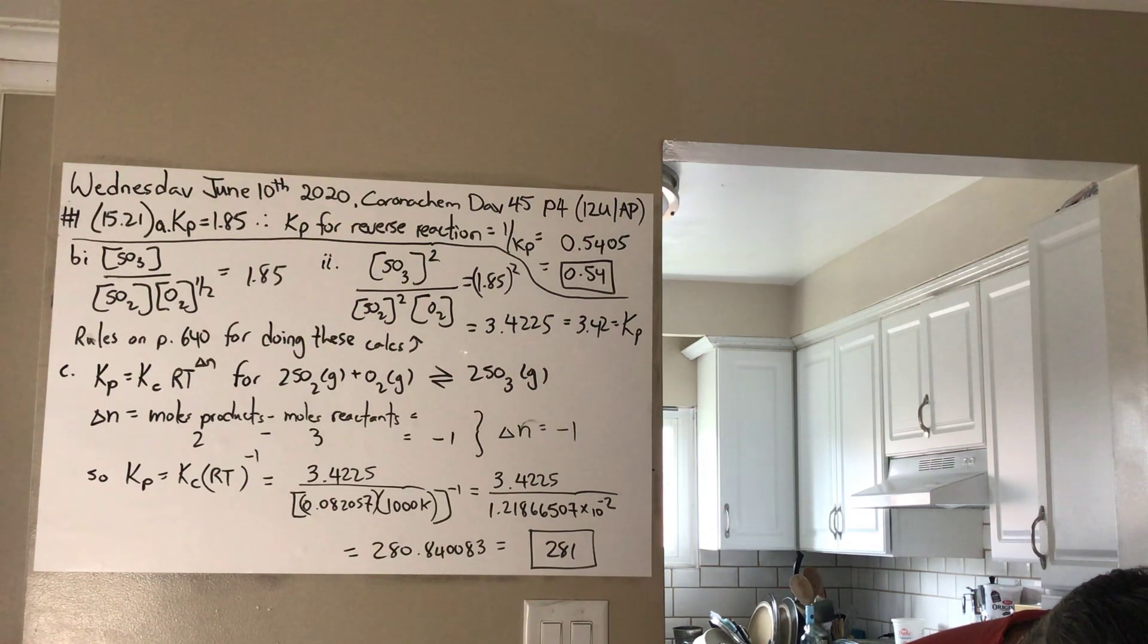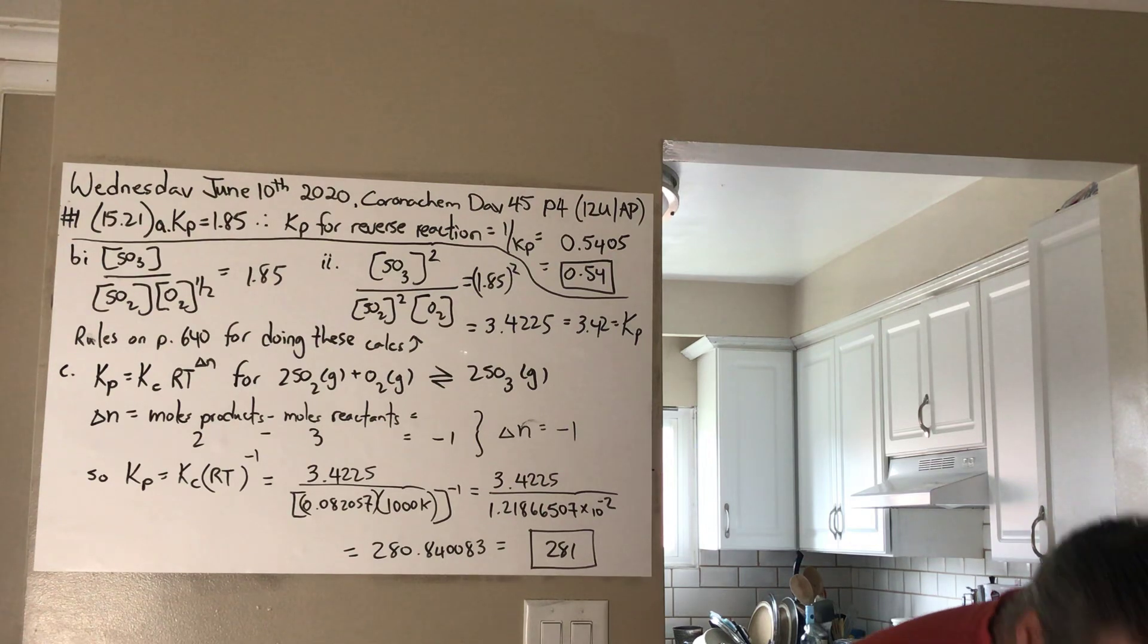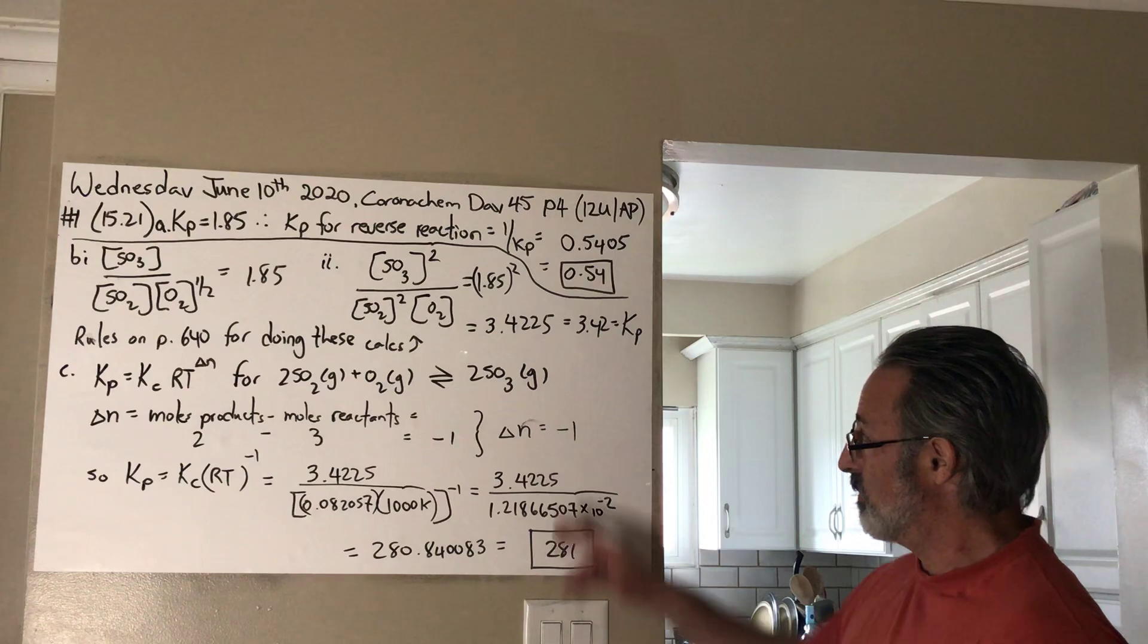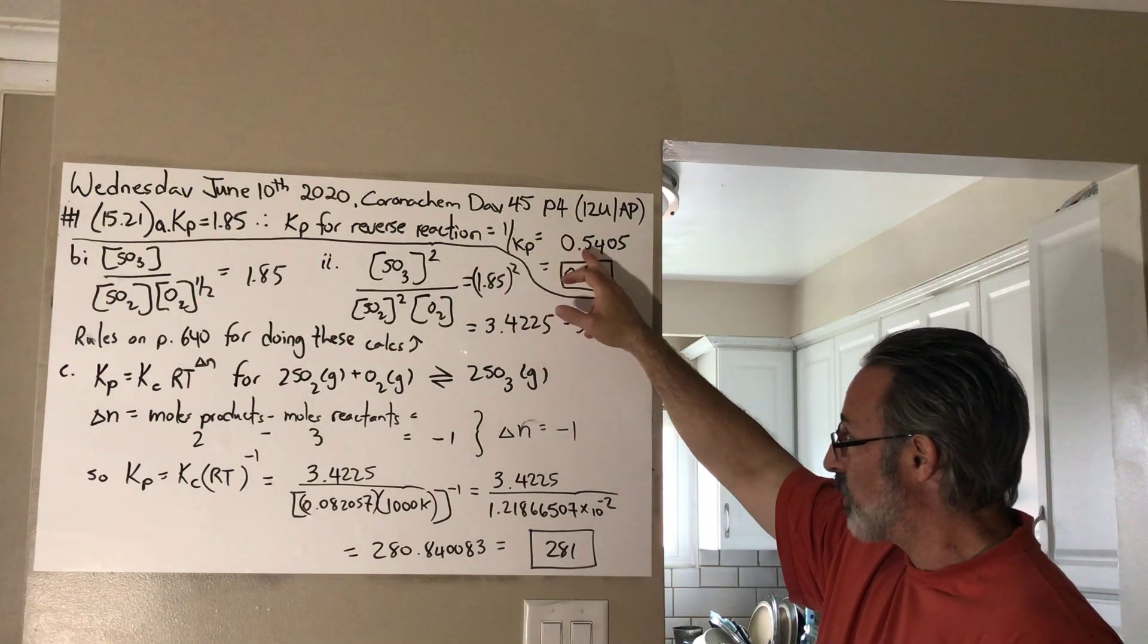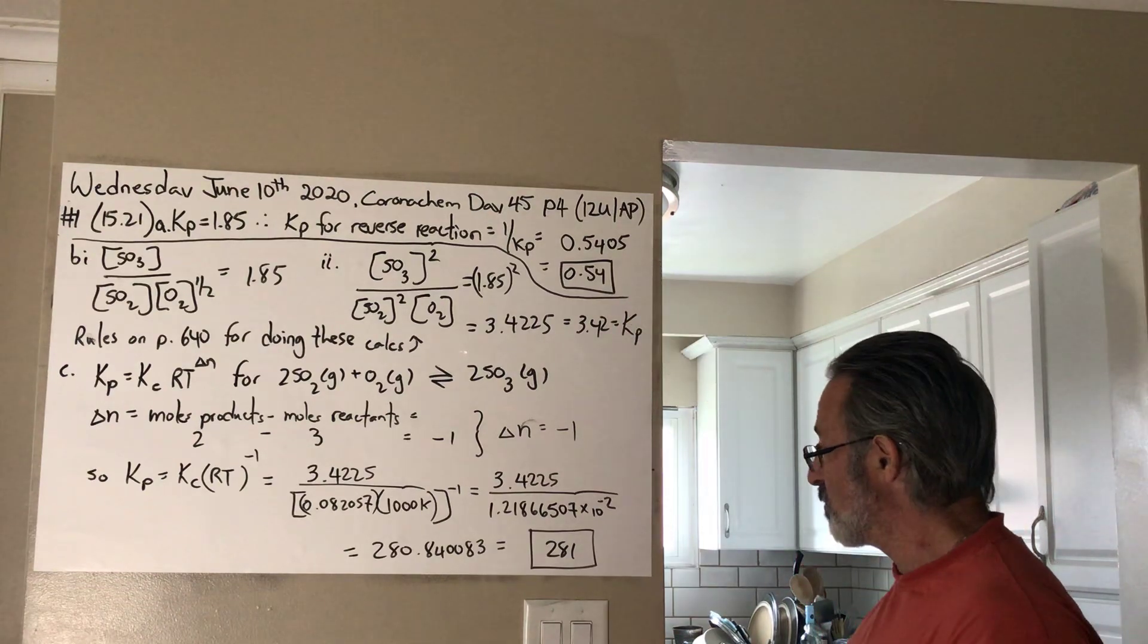Part A, what is the value of KP for the reaction reversed? When you reverse the reaction, you take the reciprocal of the KP value. So, 1 over KP is 1 over 1.85. You get 0.5405, rounds off to 0.54.